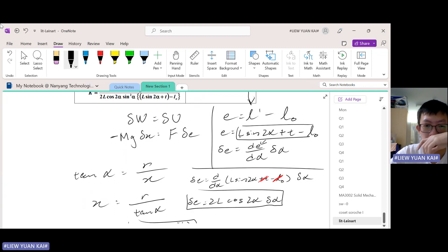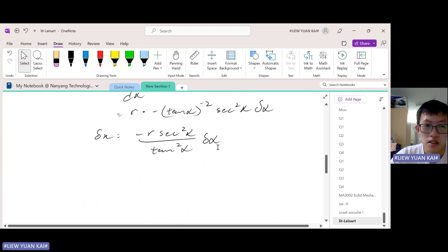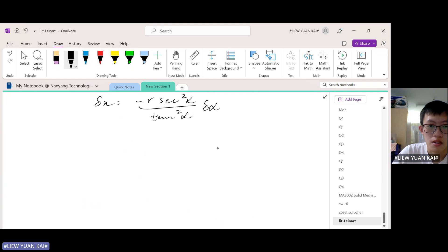So now we have to sub this into the PVW formula. So this is 2L cos 2α. So remember, the PVW was like this, which became this.